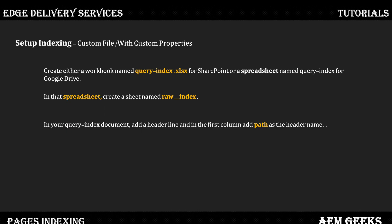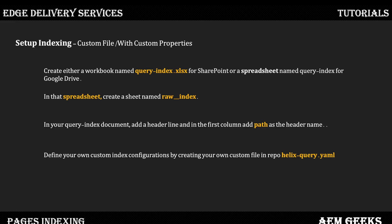The initial steps are the same as I explained earlier. You create a query-index file in either your SharePoint or Google Drive based on what kind of application you are using. Create a sheet there named raw-index and add a column with the header 'path'. These three steps you have to perform here as well — they actually create the query-index file. The different thing here is that in the previous tutorial, for basic indexing, you add column headers. Here, instead, you create a configuration file called helix-query.yaml. In this file you add all the configuration: what properties you want in your index file and how you get information for that particular property. This file goes as part of your code, not as part of content.